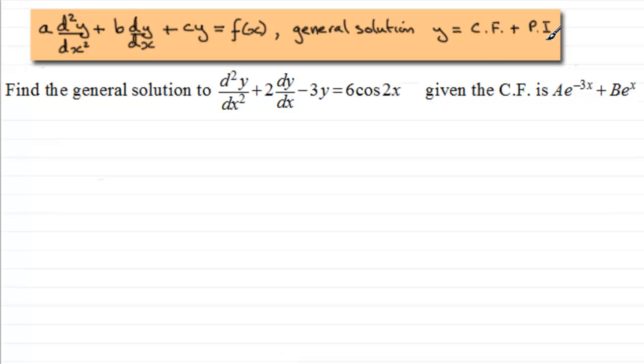And in this video we're going to be looking at equations where f of x is a trigonometric function. In this example we've got to find the general solution to the equation d²y/dx² plus 2 times dy/dx minus 3y equals 6cos2x.